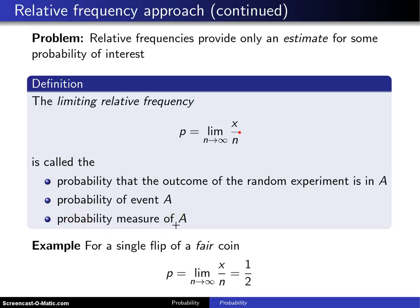So for example, the flipping of a single fair coin, and that's an important word that has to be put in there, as long as the coin is fair, then P will be the limit as n goes to infinity of x over n, and that will converge to one-half.